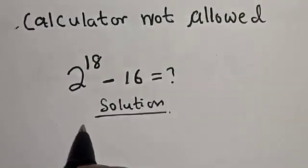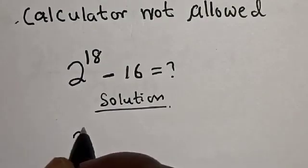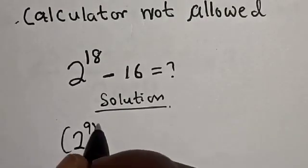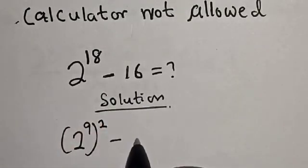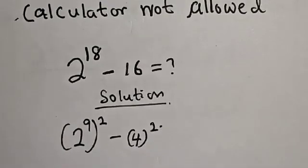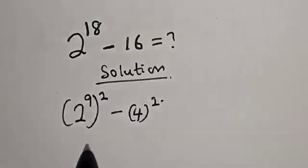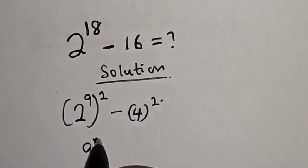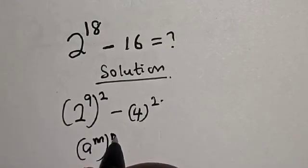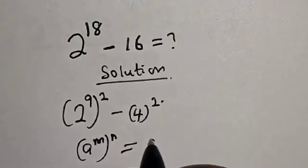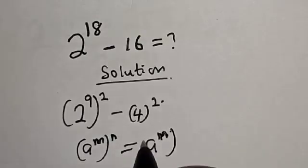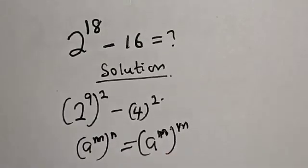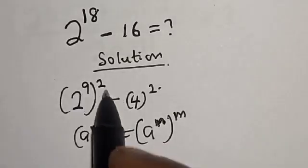2 raised to power 18 can be written as 2 raised to power 9, squared, minus 16, which is the same as 4 squared. Remember this rule: a raised to power m, raised to power n, equals a raised to power mn. So (2^9)^2 equals 2^18.